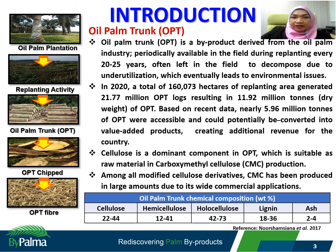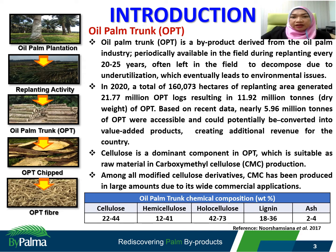OPT is an organic compound comprising lignocellulosic materials such as cellulose, hemicellulose, lignin, and ash. Cellulose is the dominant component in OPT, making it suitable as a raw material in carboxymethyl cellulose production. Among all modified cellulose derivatives, CMC has been produced in large amounts due to its wide commercial application.